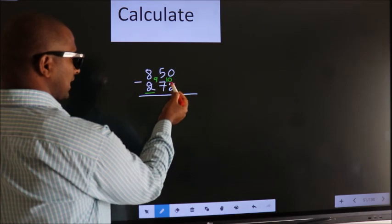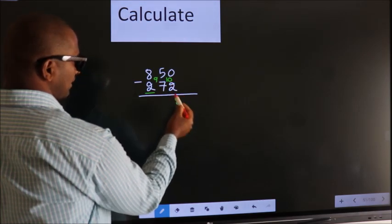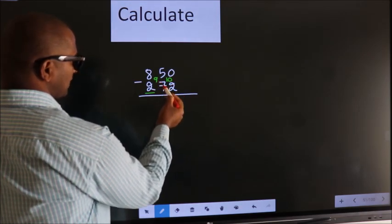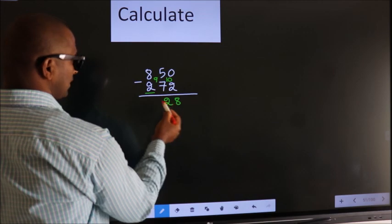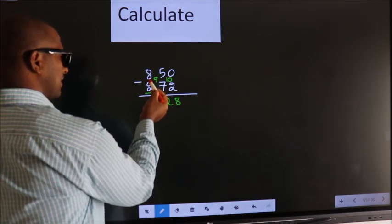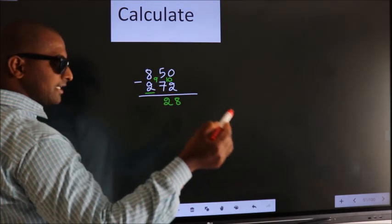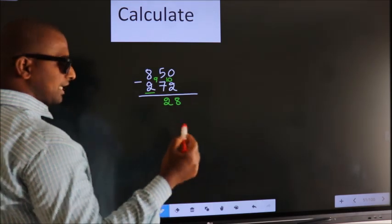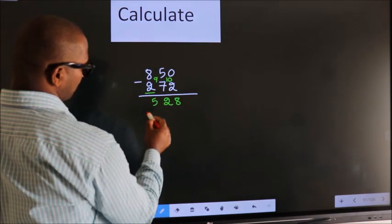Now 10 minus 2 is 8. 9 minus 7 is 2. For the first digit, 8 minus 2, we get 6. Decrease more by 1, we get 5.